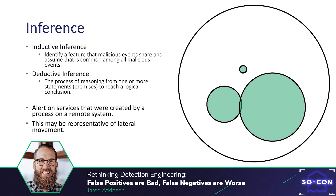We often deal in two types of inference: inductive and deductive. In inductive inference we identify a feature shared among a set of malicious events and assume that feature is common among all malicious events. Deductive inference is the process of reasoning from one or more logical premises to reach a conclusion — in this case we set our detection to alert on services created by a process on a remote machine, as this may be indicative of lateral movement. Both approaches are somewhat flawed: inductive inference is prone to confirmation bias, and deductive inference relies on your understanding of the problem as a whole.